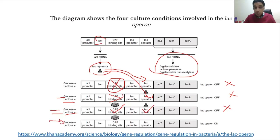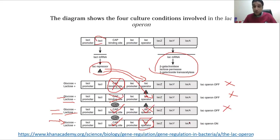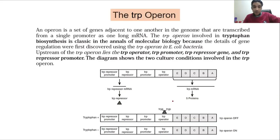Fourth case: glucose is absent — the absence of glucose increases cyclic AMP levels, which puts the CAP binding protein onto the CAP binding site. Since lactose is present, the lactose binds with the repressor and pushes the repressor away, so no repressor can bind to the operator. A 'yes' from the CAP binding site and a 'yes' from the free operator will activate the operon and produce the three enzymes, allowing lactose metabolism.